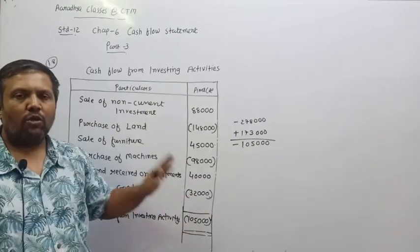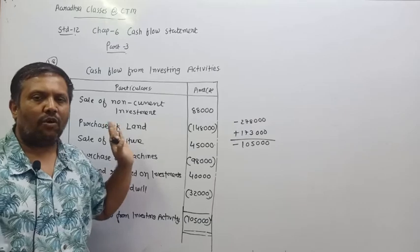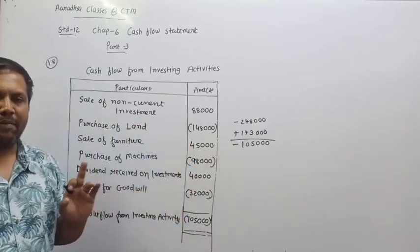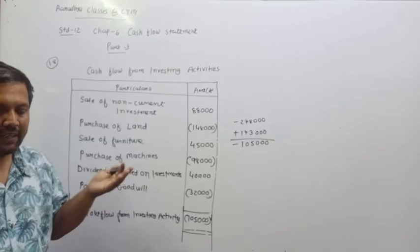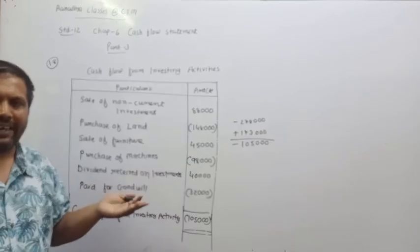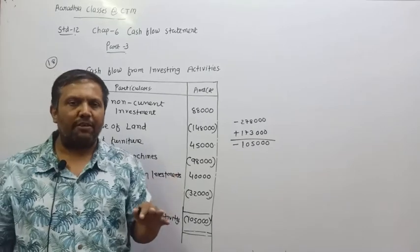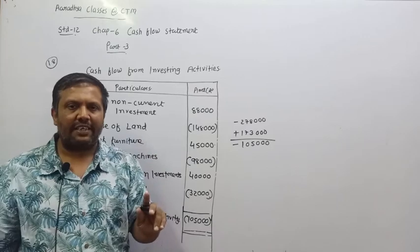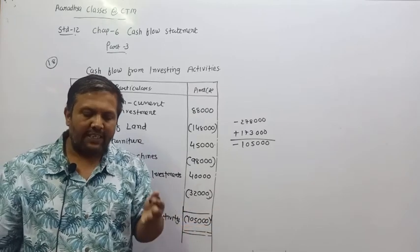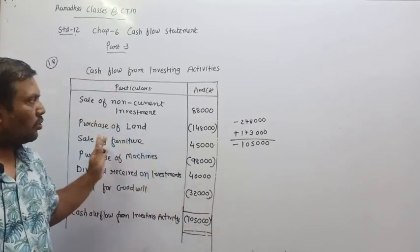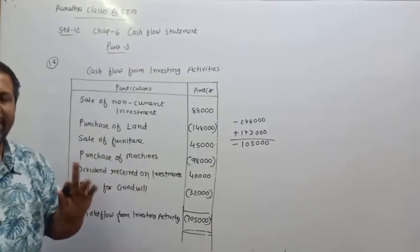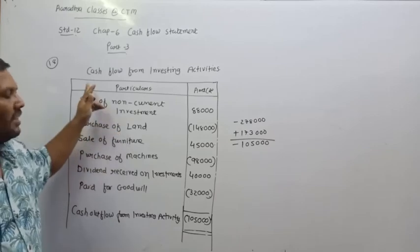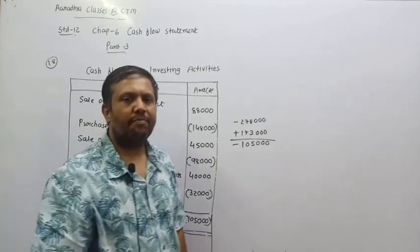Friends, in the textbook, sums 15, 16, 17 are operating activity — not in this session. After that, sums 18 and 19 are investing activity — which we are covering now. Sums 20 and 21 are financing activity. So sums 18 and 19 are investing activity and are in this session. This is sum number 18. Okay friends, thank you.